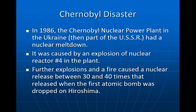Further explosions and a fire caused a nuclear release between 30 and 40 times that of the first atomic bomb dropped on Hiroshima. Think about that — put it into perspective. You've seen pictures and talked about what happened when the atomic bomb was dropped, how much damage occurred and people were vaporized and there were just shadows of people left on things. Now think about the damage it did, and then think about 30 to 40 times that.